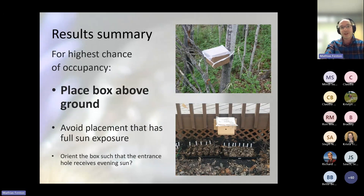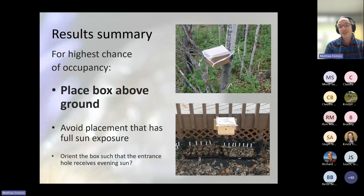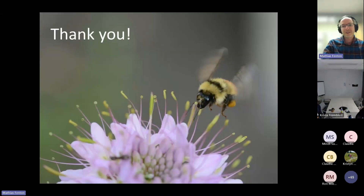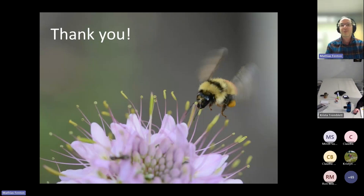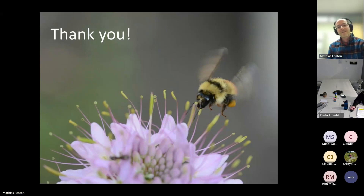One more variable: we did have an opinion beforehand that it's not good to put boxes in full sun because that will likely overheat the box, and then the bees will die because they cannot keep up with cooling it using their wings. We do see a little bit of confirmation of that — boxes in high sun environments were less occupied. The average is around 20%, but if you put them in high sun, we only had 10% of the boxes occupied. It's not significant yet, so we might find more when we have more data. To summarize: if you want to maximize your chances of getting a box occupied, place it above the ground — this also helps prevent it from getting wet from the bottom. Avoid placing it in full sun, and you could try orienting it to face evening sun. We're not sure if that will help, but at least it's an idea. Thank you very much for having us here.